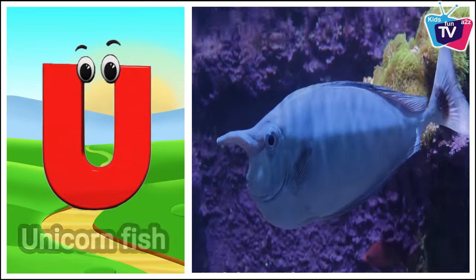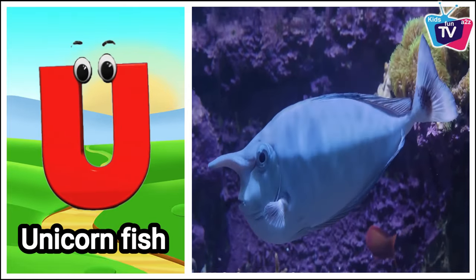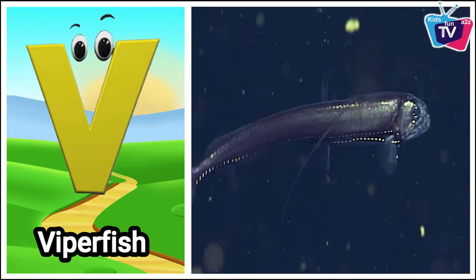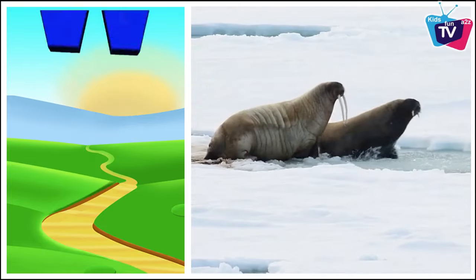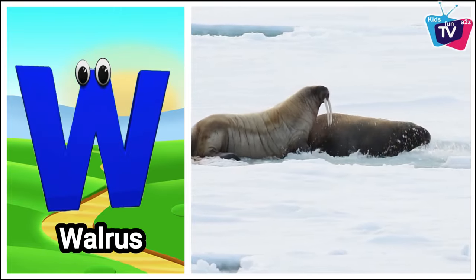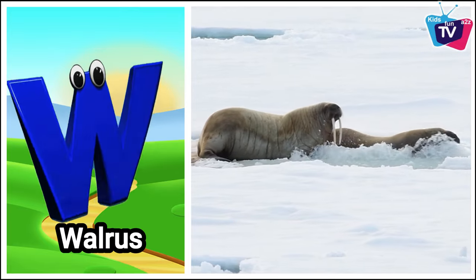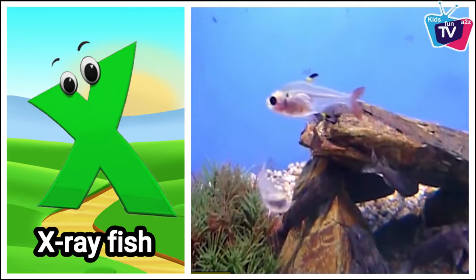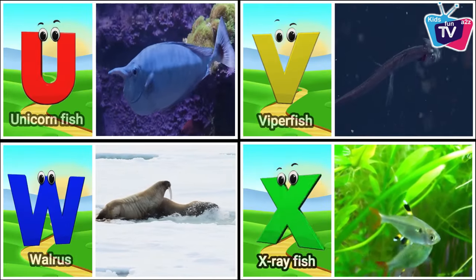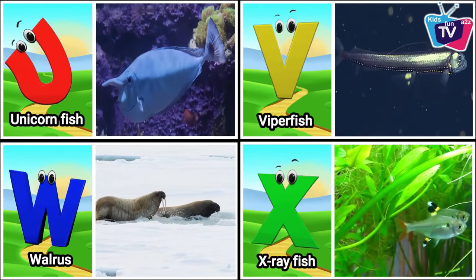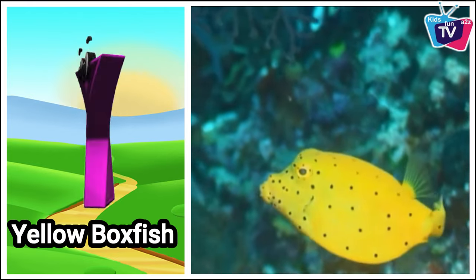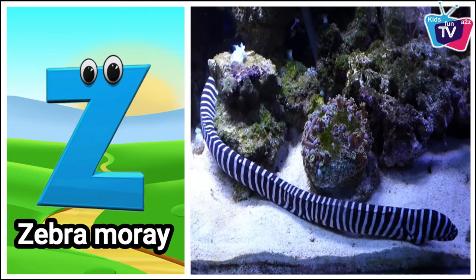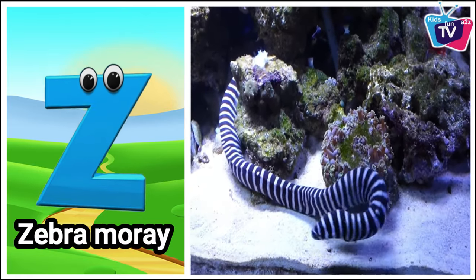U is for unicorn fish. V is for viper fish. W is for walrus. X is for X-ray fish. Y is for yellow boxfish. Z is for zebra moray.